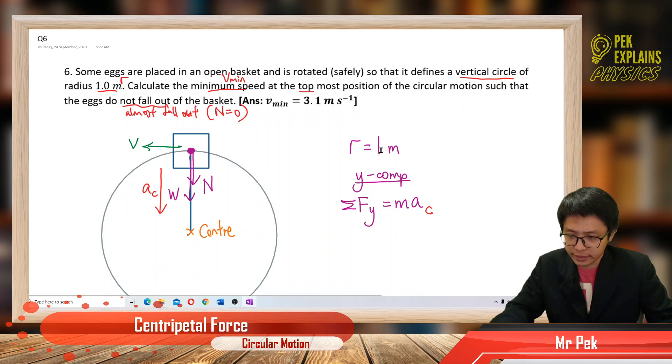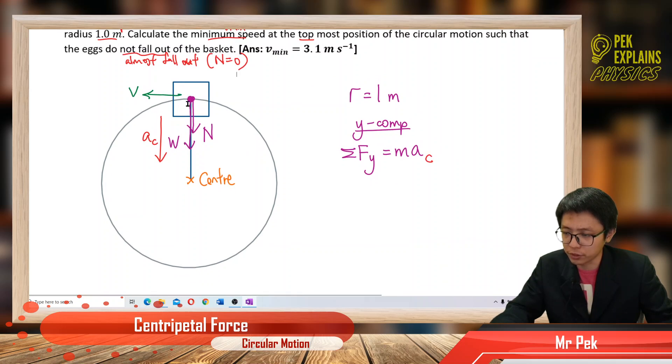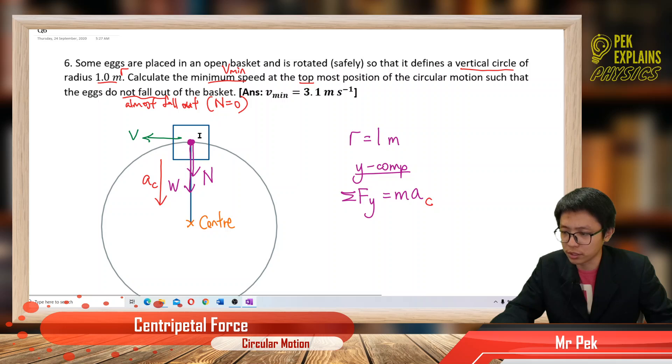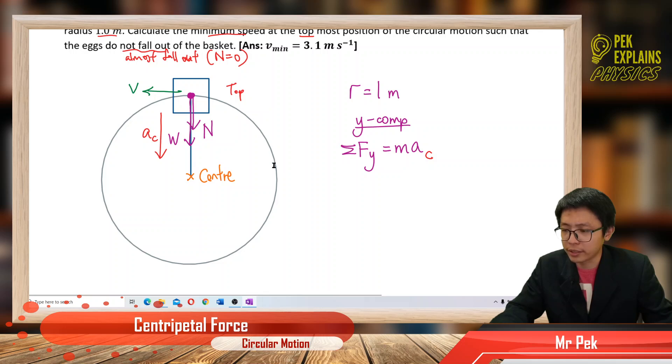Alright, we have the radius, he gave us 1 meter radius. And at the top position, this is the top position. So at the top position, you must draw the free body diagram first. Draw a point mass first, all the forces must come from the point mass. The center of the circle is at the bottom, below the block.